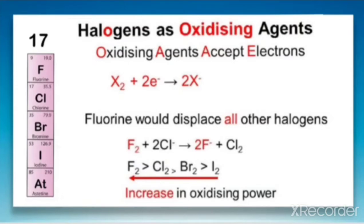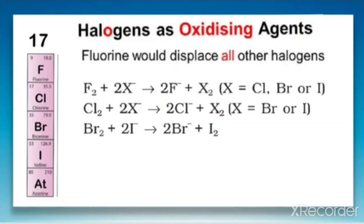This can be better explained through this reaction. Fluorine displaces all other halogens, as shown by the equations. In the first equation, fluorine acts as an oxidizing agent by displacing halides — chloride, bromide, or iodide. It can displace all three.